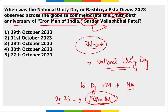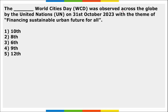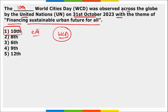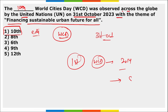World Cities Day was observed on 31st October with the theme 'Financing Sustainable Urban Future for All.' This was the 10th edition, observed by the United Nations. The first edition of World Cities Day was observed in 2014 in Shanghai.